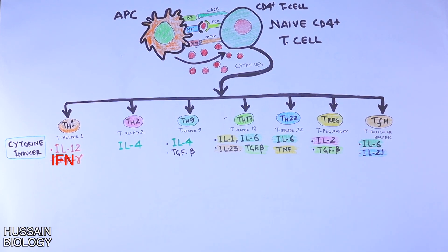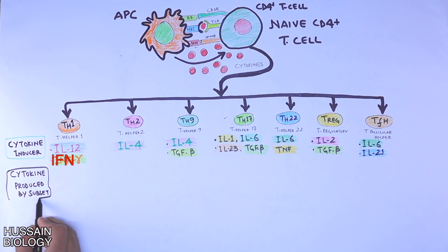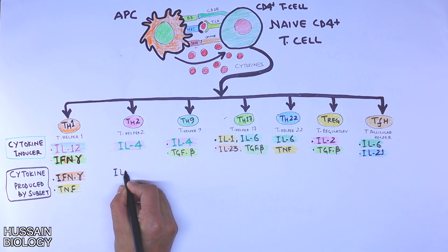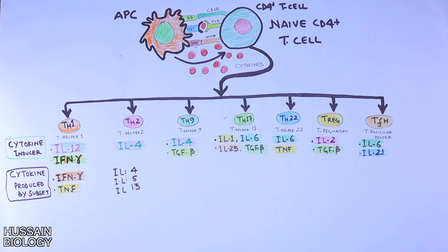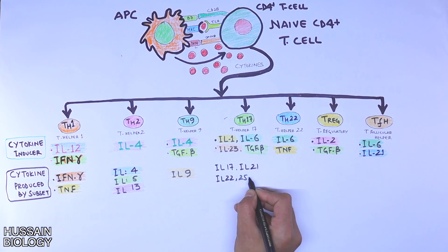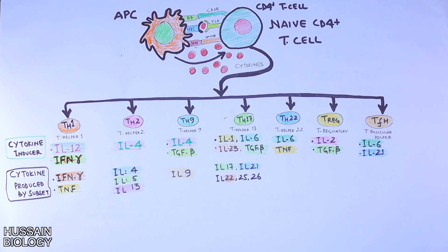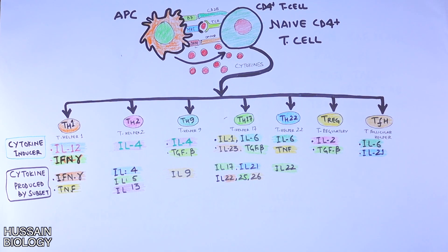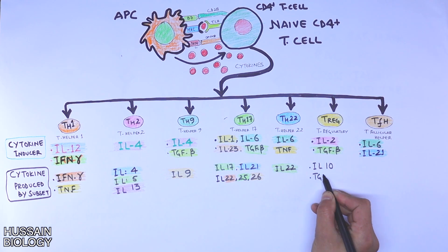Now let's see what cytokines are produced by these CD4-positive subsets. TH1 produces interferon gamma and TNF. TH2 produces IL-4, IL-5, and IL-13. TH9 produces IL-9. TH17 produces IL-17, IL-21, IL-22, IL-25, and IL-26. TH22 produces IL-22. T regulatory cells produce IL-10, IL-35, and TGF-beta. TFH produces IL-21.